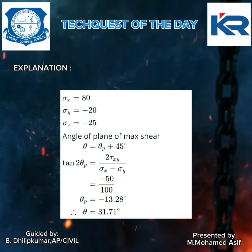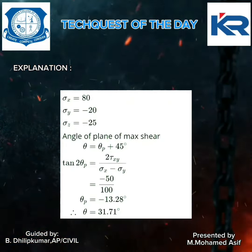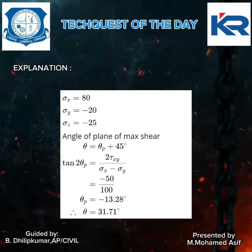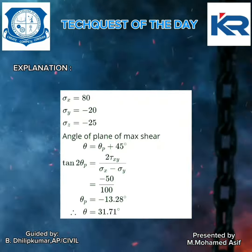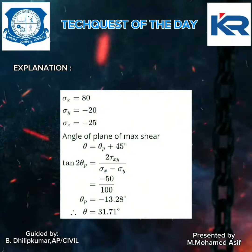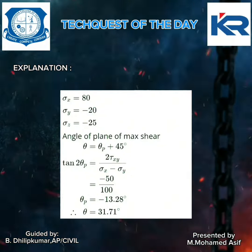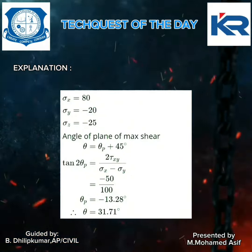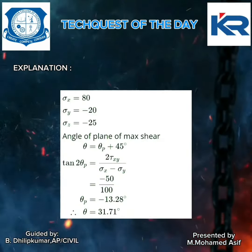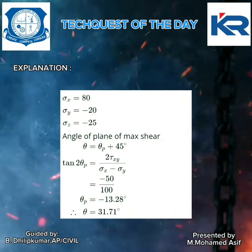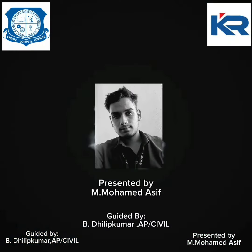The angle of the plane of maximum shear stress is theta equals theta p plus 45 degrees. tan(2 theta p) equals 2 tau xy divided by (sigma x minus sigma y), which gives theta p equal to minus 18.28 degrees. Computing theta equals theta p plus 45 degrees, we get the value 31.71 degrees. Thank you.